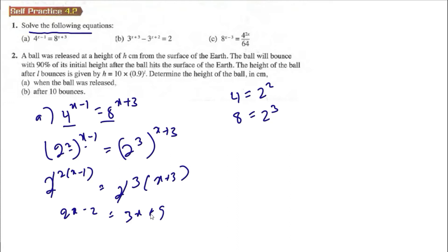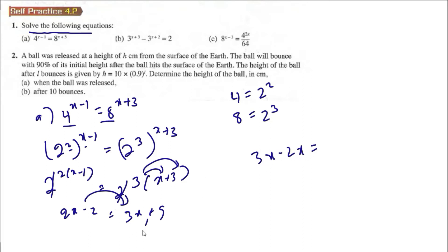We bring 2x to the right: 3x minus 2x, and bring the constants to the left: negative 2 minus 9. So we have x is equal to negative 11.